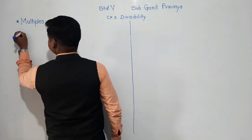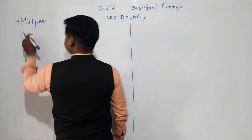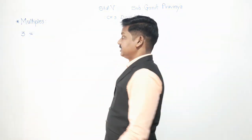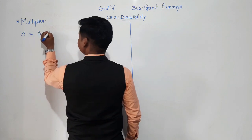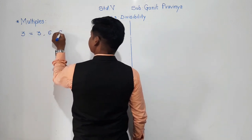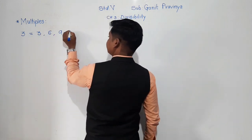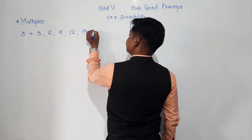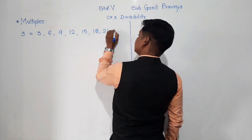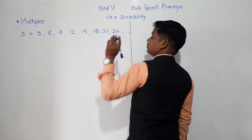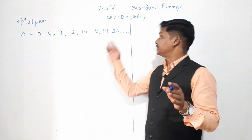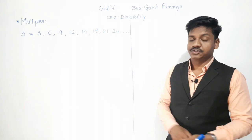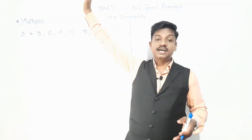Multiples are the numbers which come in the table of the given number. For example, if the number is 3 and you want to find multiples of 3, you know the numbers in the table of 3: 3 ones are 3, 3 twos are 6, 3 threes are 9, 3 fours are 12, 3 fives are 15, 18, 21, 24, 27, 30, 33, 36, and so on. These are uncountable.